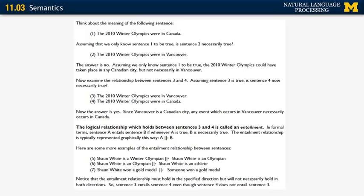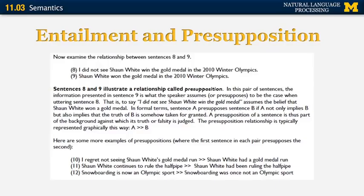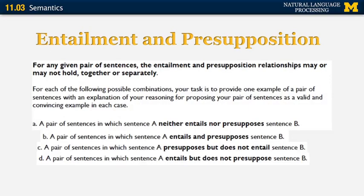The first part of the NACLO problem introduces the concepts of entailment and presupposition with examples. For instance, for presupposition: 'I regret not seeing Shaun White's gold medal run' presupposes that Shaun White had a gold medal run — otherwise it doesn't make sense. The questions ask you to give examples of pairs of sentences where A neither entails nor presupposes B, where A both entails and presupposes B, and cases where you have one but not the other.